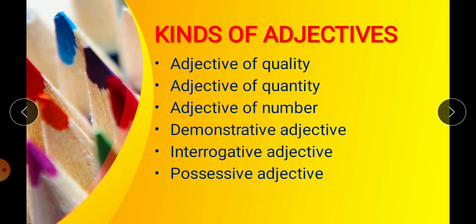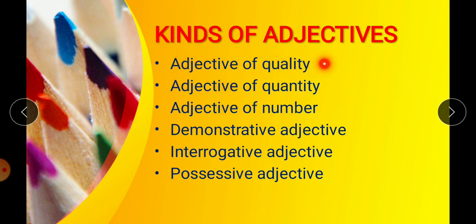Now, coming to the kinds of adjectives. In this chapter, we will be learning about six types of adjectives: adjective of quality, adjective of quantity, adjective of number, demonstrative adjective, interrogative adjective, and possessive adjective. In this particular class, we will be covering the top three — adjective of quality, adjective of quantity, and adjective of number. The last three we will cover in our next class.